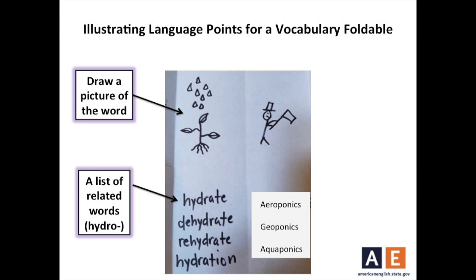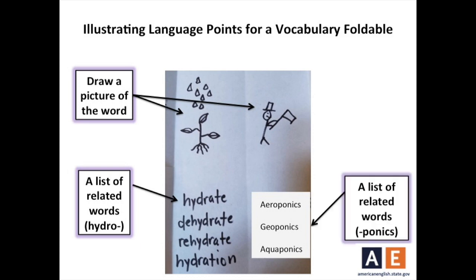Now, on the other side of the mini-book, draw a picture to represent ponics, which means to work. As you can see, I drew a simple picture of a man working. Just so you know, he's holding an axe, which is a tool used to cut down trees. And, like the other side, I wrote some words relating to ponics, such as aeroponics, geoponics, and aquaponics.